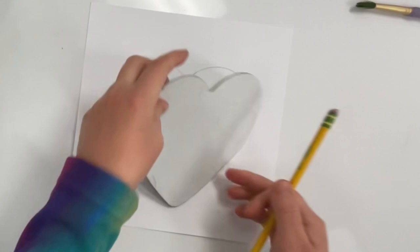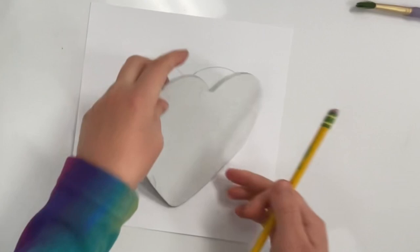First, I'll trace a heart shape in the middle of my paper. Then I'll flip my paper over and write my name on the back.